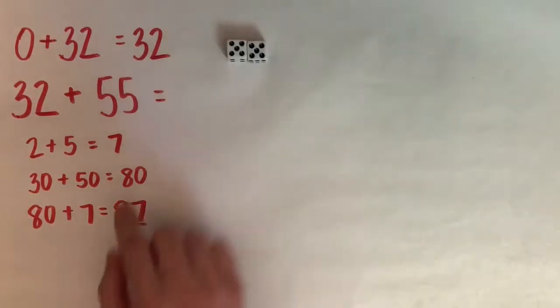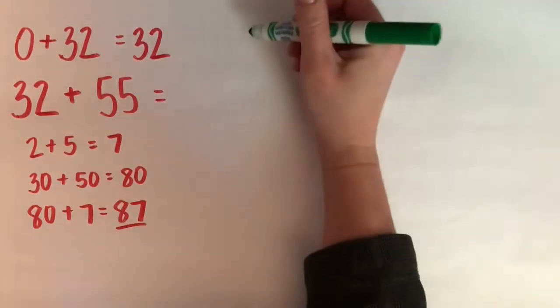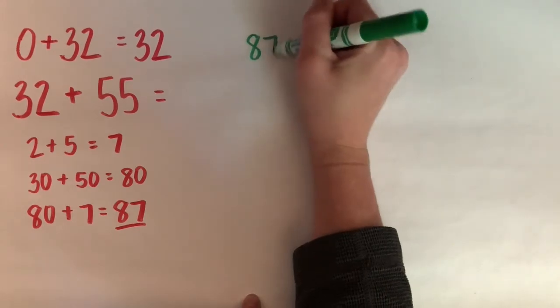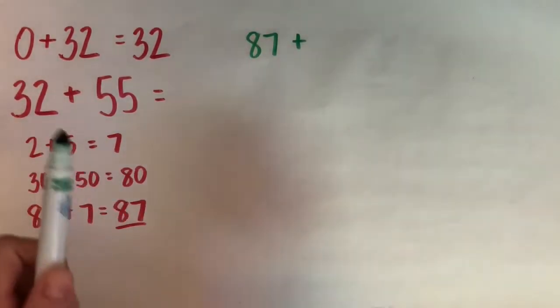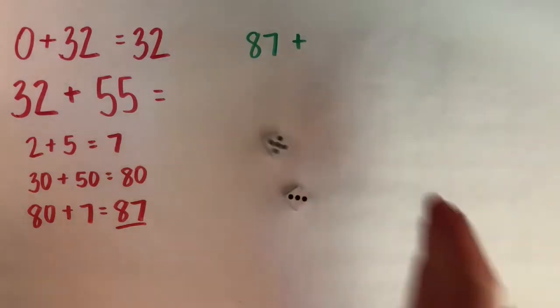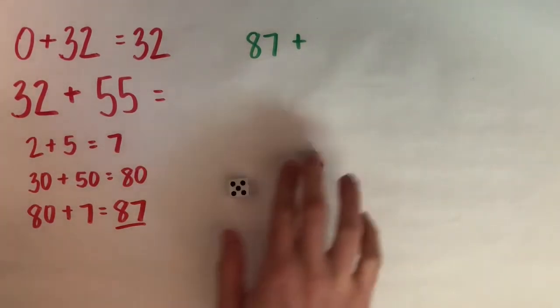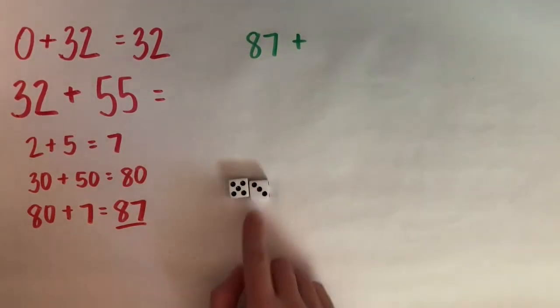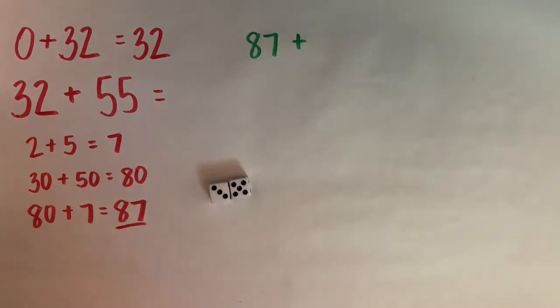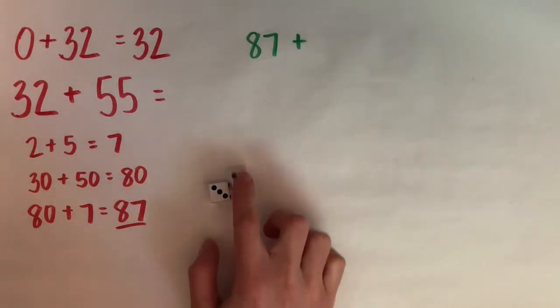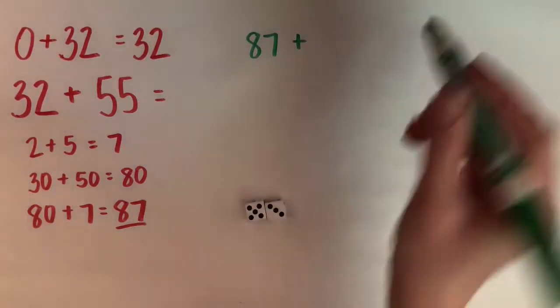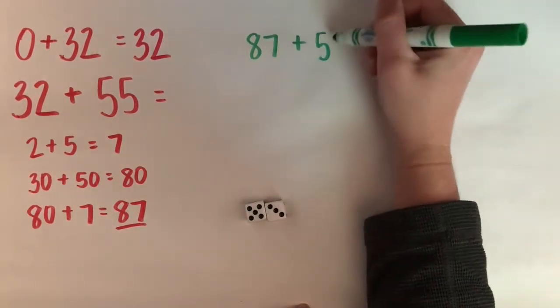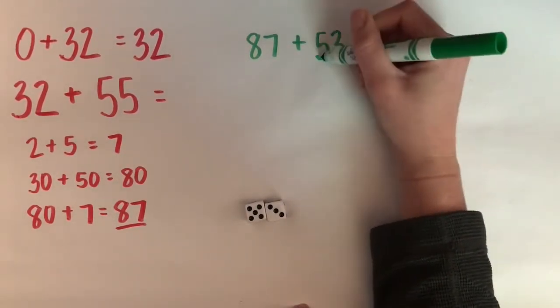So I have 87. That's where I'm going to start my next equation and then I'm going to roll my dice to see what I'm adding to 87. So I have a 5 and a 3. So I can make 53 or I can make 35. In my head I know that 53 is bigger or greater than 35. So I'm going to add 53 so I can get to 1000 first.